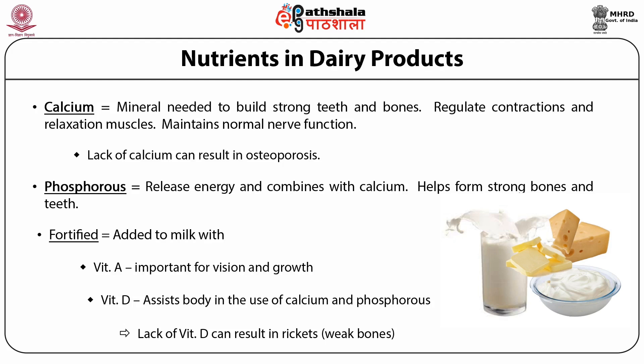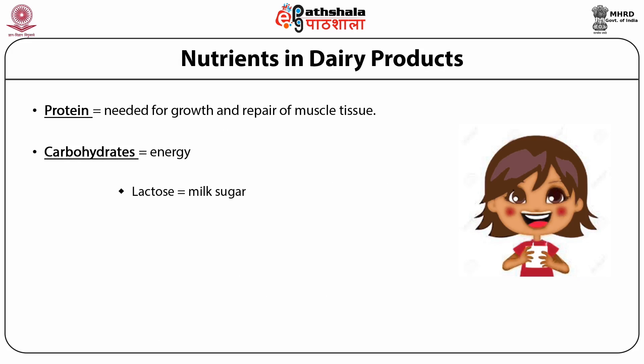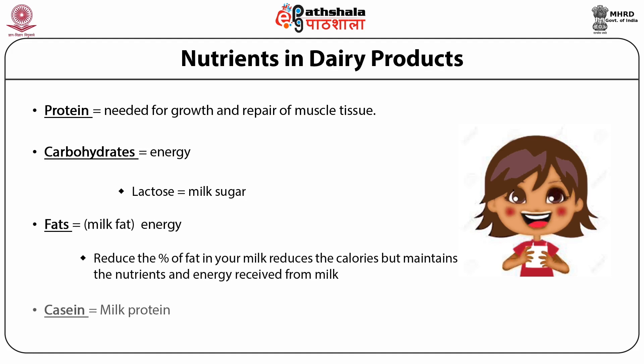Milk is a good source of macronutrients — it contains protein, carbohydrates and fats. The proteins of milk are casein, lactalbumin and lactoglobulin. The milk fat content differs as per the type and amount of processing. Milk is also a good source of carbohydrate; it contains lactose, which is a unique carbohydrate found only in milk.